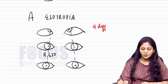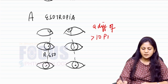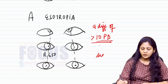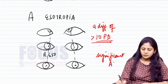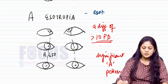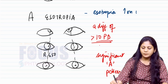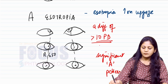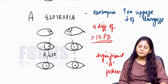For A pattern, a difference of more than 10 prism diopters accounts for a significant A pattern. To revise: A esotropia means esotropia or convergence increases on up gaze and decreases on down gaze. This is your pattern squint.